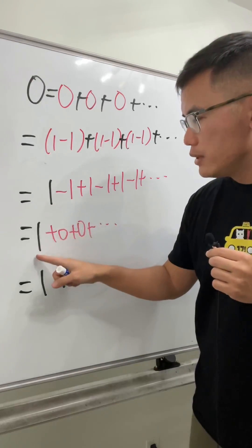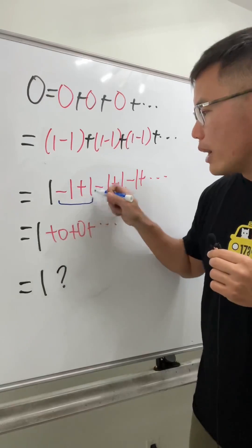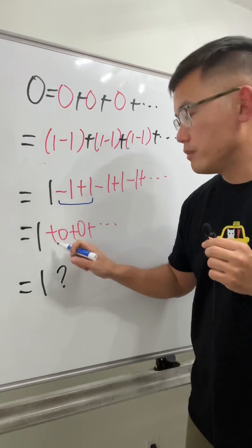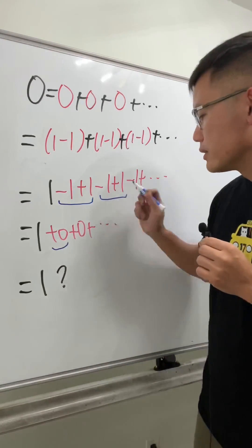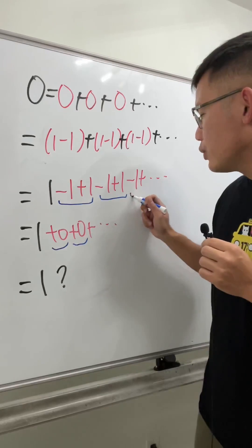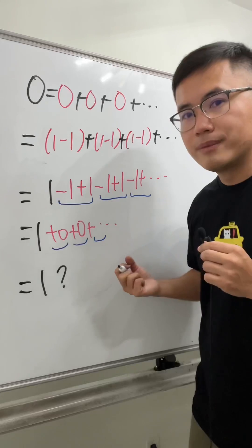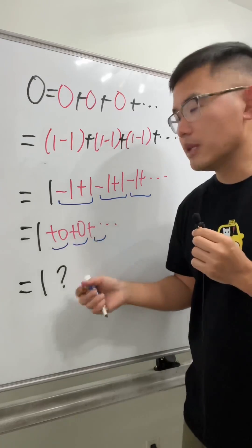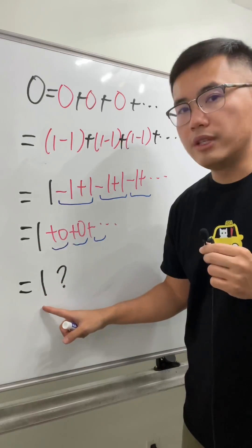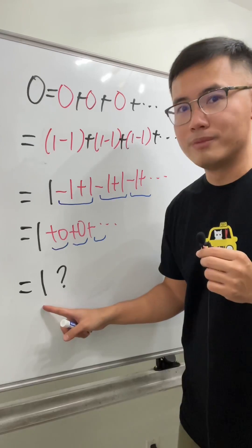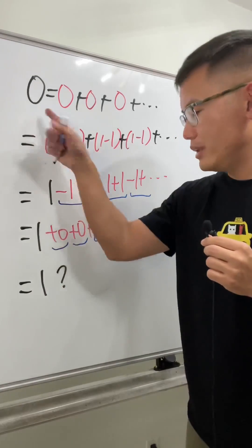This one still stays, but negative one plus one is zero, and then negative one plus one is zero, and negative one plus the next one is zero, and so on. Of course, all these are just zeros, so finally we just end up with one. Cool! Because we're saying zero is equal to one.